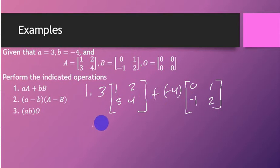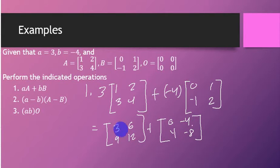By scalar multiplication, this matrix would be 3, 6, 9, 12 plus the matrix 0, negative 4, 4, negative 8. Adding the two matrices here, we're going to get the resulting matrix of 3, 2, 13, 4.